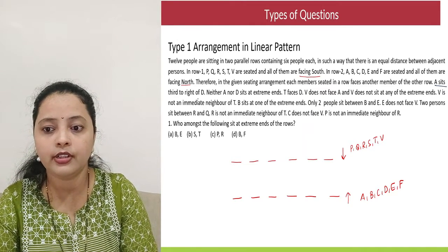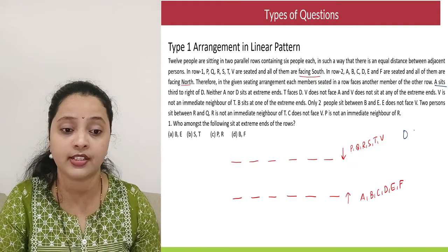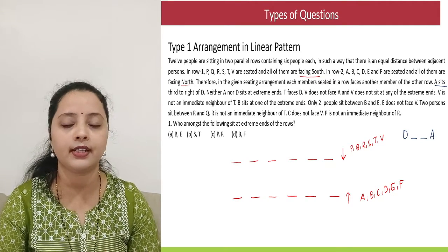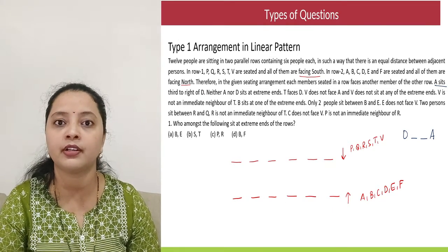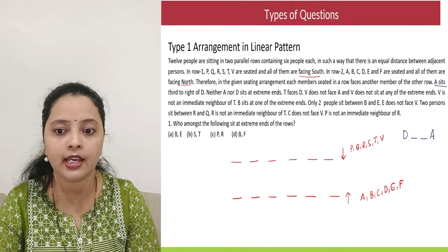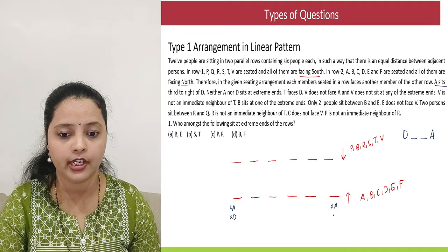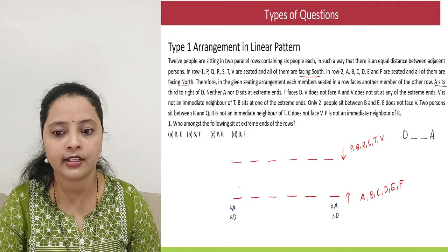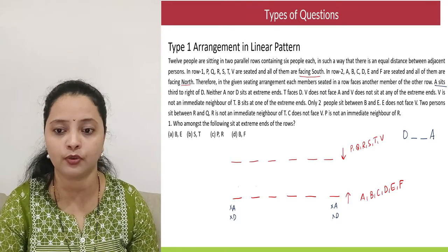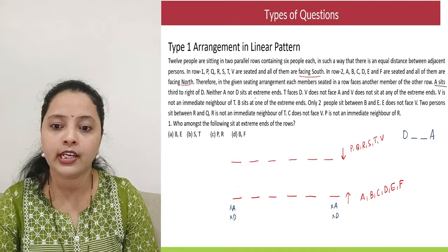The first clue: A sits third to the right of D. So there is D, then first, second, and this is A — meaning there are 2 people between D and A. There could be multiple cases here, so we cannot directly write them down. Further, they say neither A nor D sit at the extremes. So the first and last positions are ruled out for both. If D were at position 1, then A would fall at position 4 — but checking all constraints, neither can be at the extremes.